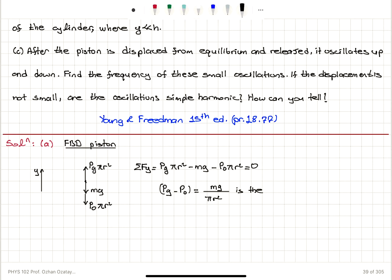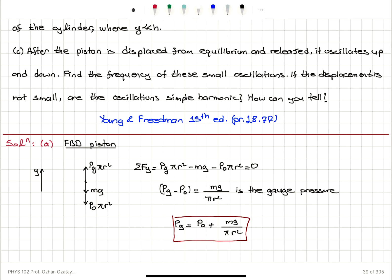So the pressure difference is the weight of the piston mg divided by pi r squared — this is the gauge pressure, the pressure with respect to atmospheric pressure. Therefore, the pressure of the gas is the outside pressure p0 plus mg divided by pi r squared. This is the absolute pressure of the gas.